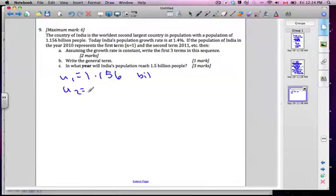U2, well I'm gonna get 1.156 and I'm gonna multiply it by the growth rate 1.014. Or is that 1.14? 1.14 would actually be 14%. I want 1.4% so it's not growing very much. So when I multiply those together, let's see if we round to three significant figures, 1.17.